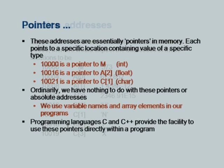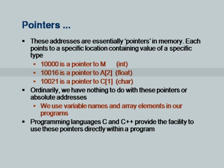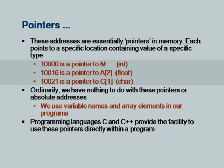These addresses are essentially pointers — they point to a specific location containing a value of a specific type. For example, the value 10000 is a pointer to M (integer type). Similarly, 10016 is a pointer to A[2], a float type value. 10021 is a pointer to C[1], a char type element. You will recall from the previous slide that these were the addresses pointing to these variables or array elements.